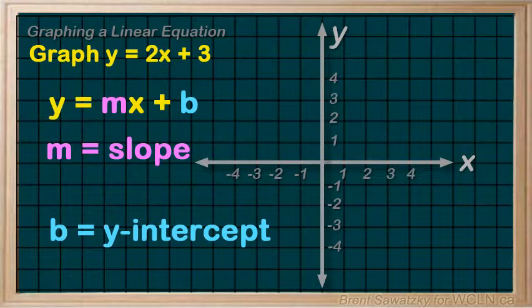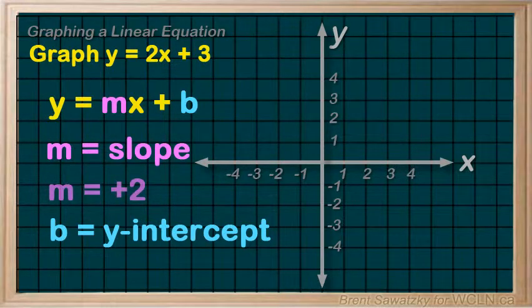Knowing this, we can see right away that with this equation, the slope is plus two and the y-intercept is plus three.